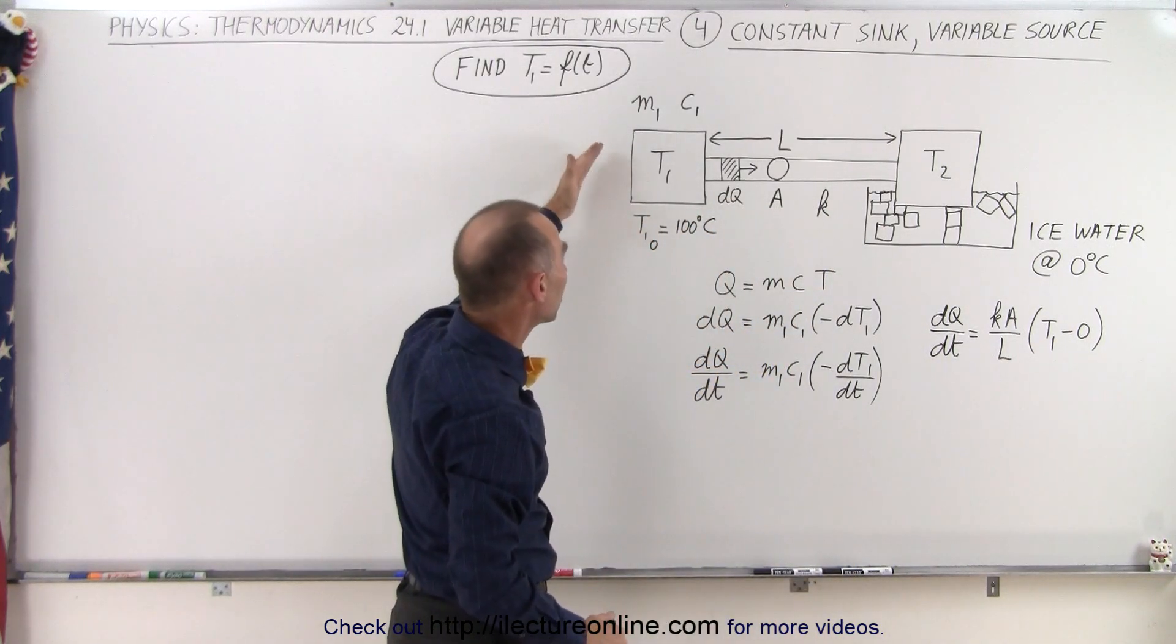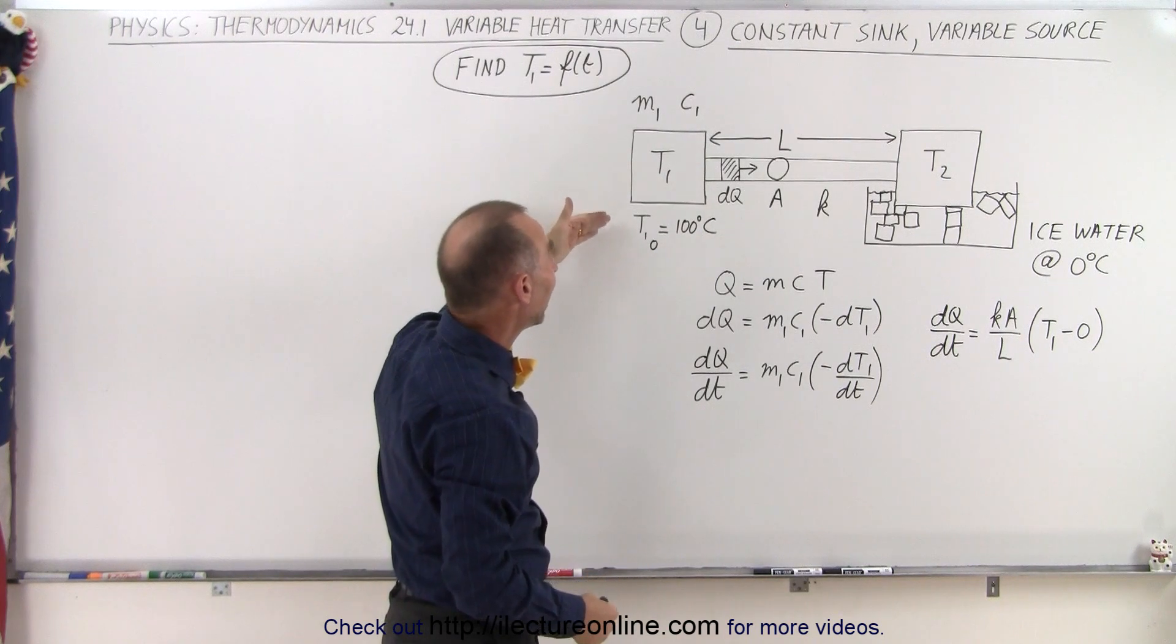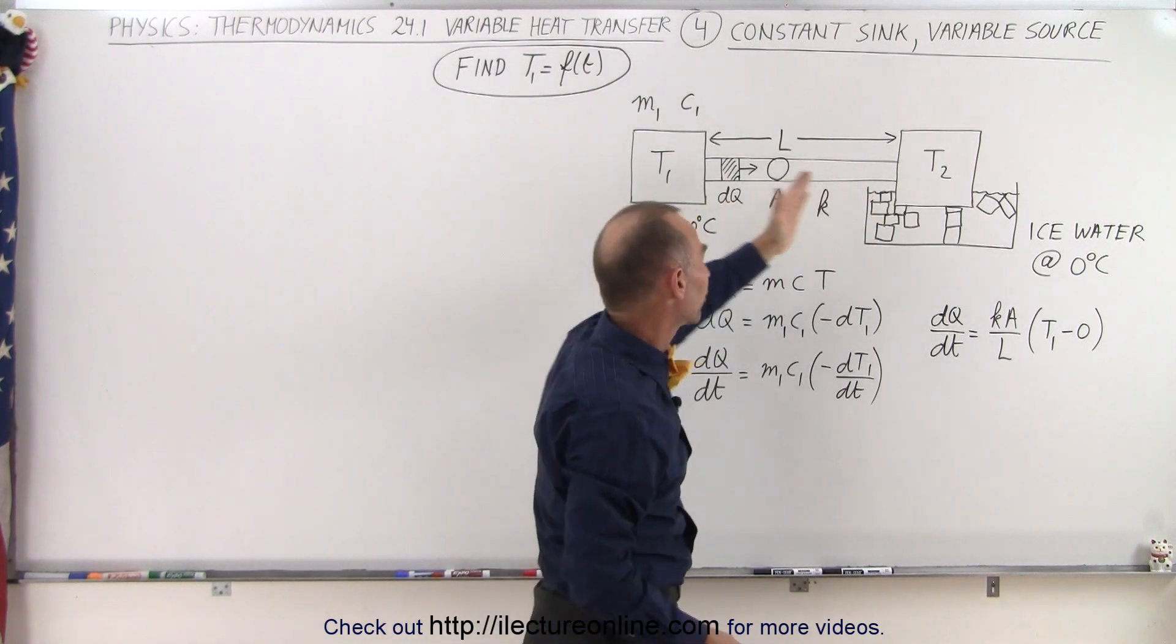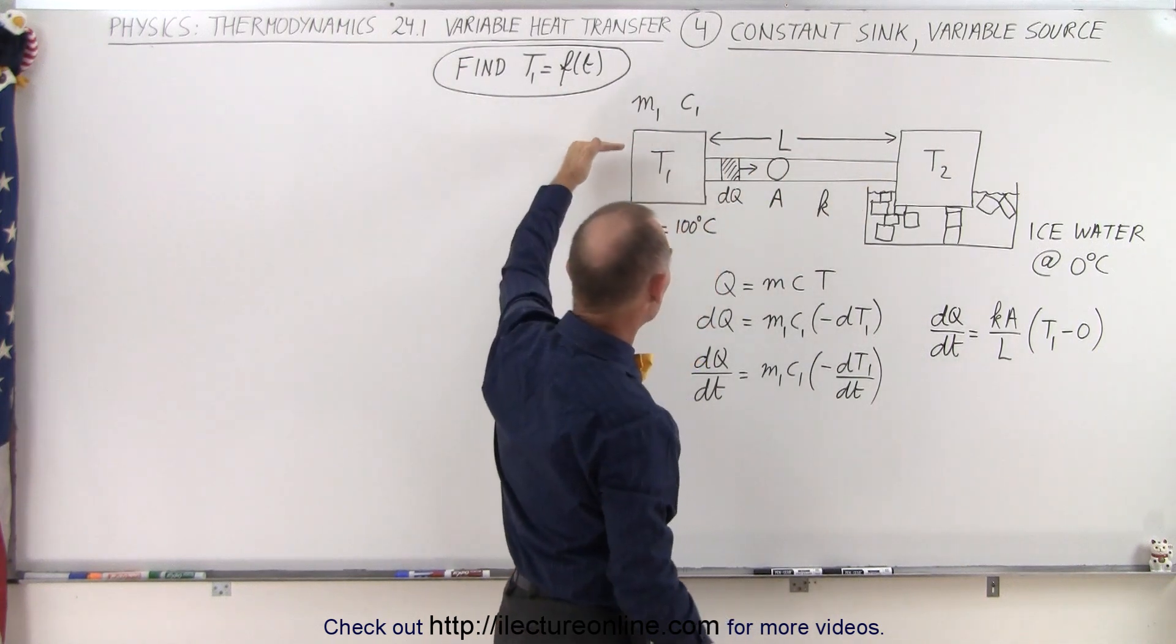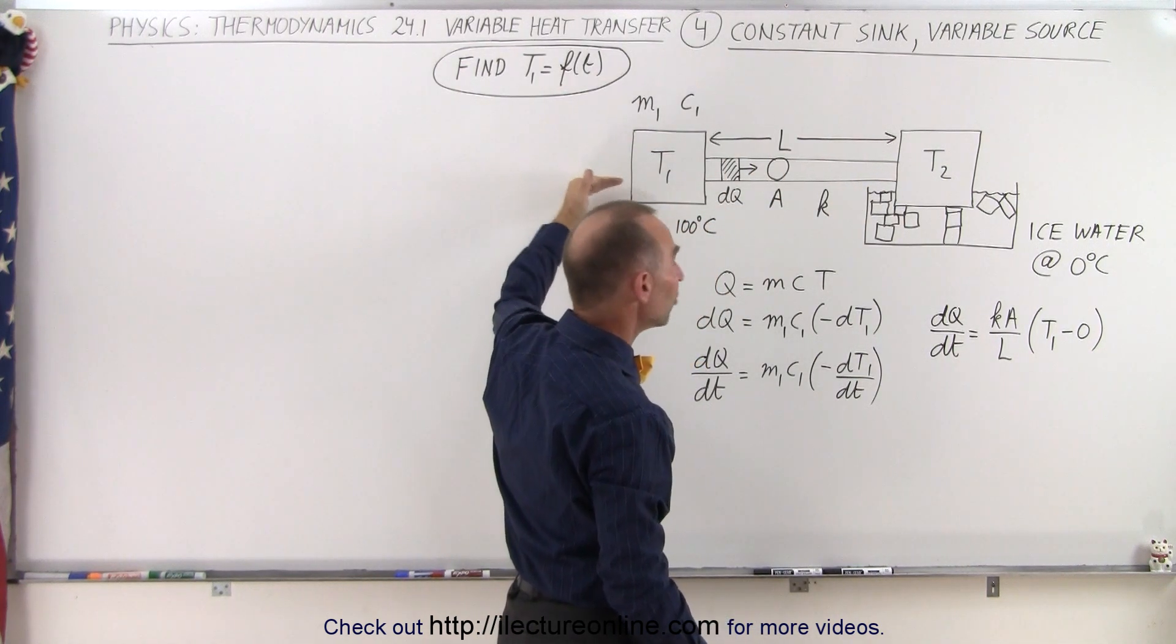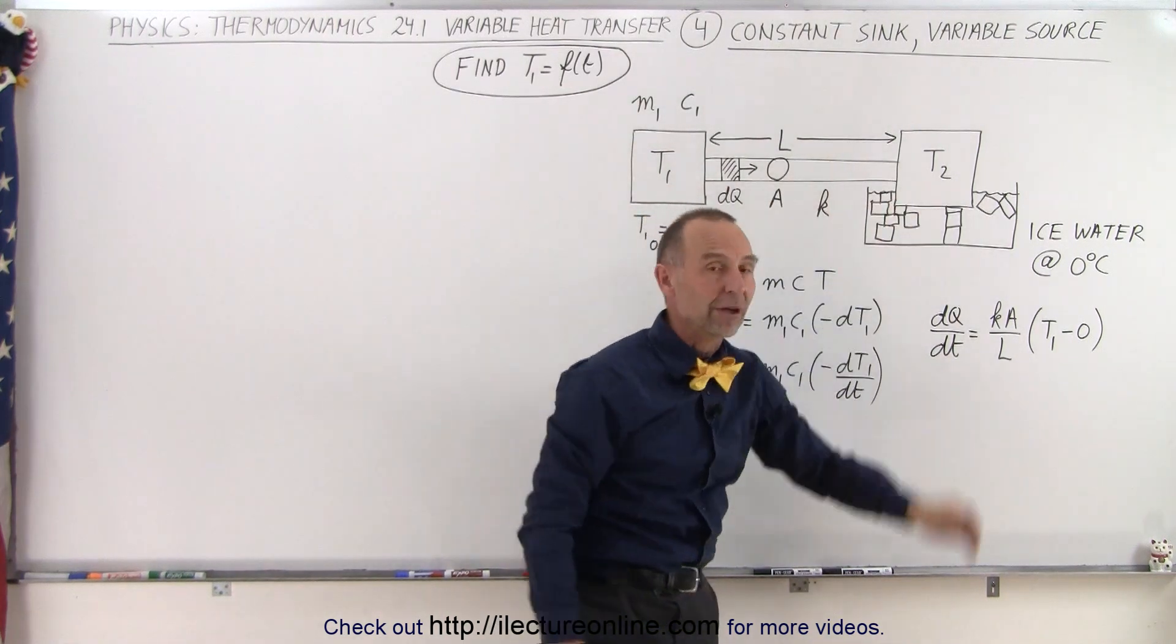And T1 starts initially at 100 degrees centigrade. Let's just call it T1 initial, and of course, as heat transfers from the heat source to the heat sink, the temperature will slowly drop in T1, and eventually, when T1 reaches 0 degrees centigrade, all heat transfer will stop.